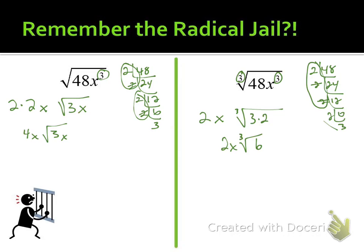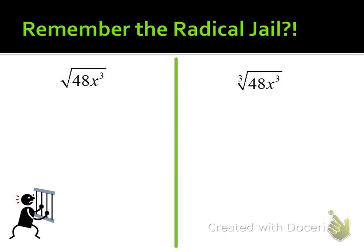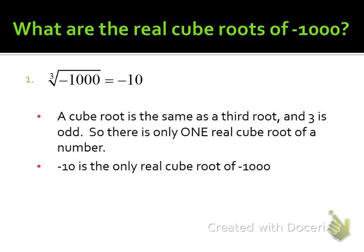If it were a fourth root, we'd be looking for four guys to break one out of jail. If it were a fifth root, five guys. The process is the same — it's just the number of guys needed to break one out that changes.